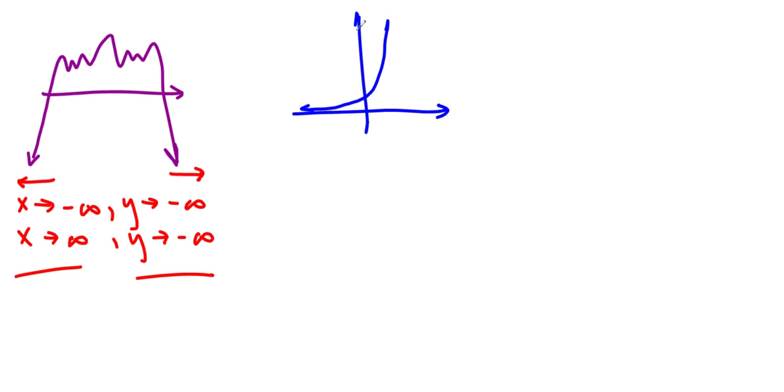And so we want this guy right here. And so let's talk about his end behavior. So as I go to the left, x approaches negative infinity, y is approaching the asymptote. It's actually approaching a horizontal asymptote. So it's y approaches 0. And as I go to the right, as x approaches positive infinity, y is going all the way up. So y approaches positive infinity as well.